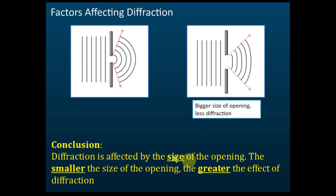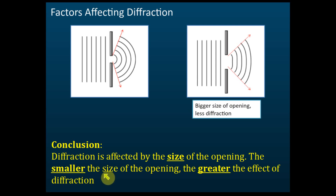Diffraction is affected by the size of the opening — the smaller the size of the opening, the greater the effect of diffraction. These are the two factors that affect diffraction: first, the wavelength; second, the size of the opening. Longer wavelength diffracts more; smaller size of the opening diffracts more.